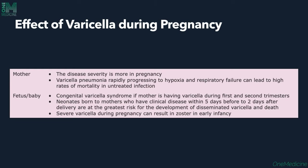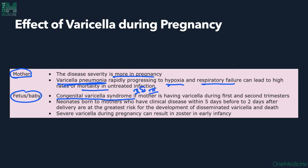Varicella during pregnancy: Disease severity is greater in pregnancy. The patient may develop Varicella pneumonia that rapidly progresses to hypoxia and respiratory failure, potentially leading to mortality. Congenital Varicella syndrome occurs if the mother has Varicella during the first and second trimester. Neonates born to mothers with clinical disease within 5 days before and 2 days after delivery are at greatest risk of disseminated Varicella and death. Severe Varicella during pregnancy can also directly cause Zoster in the infant.